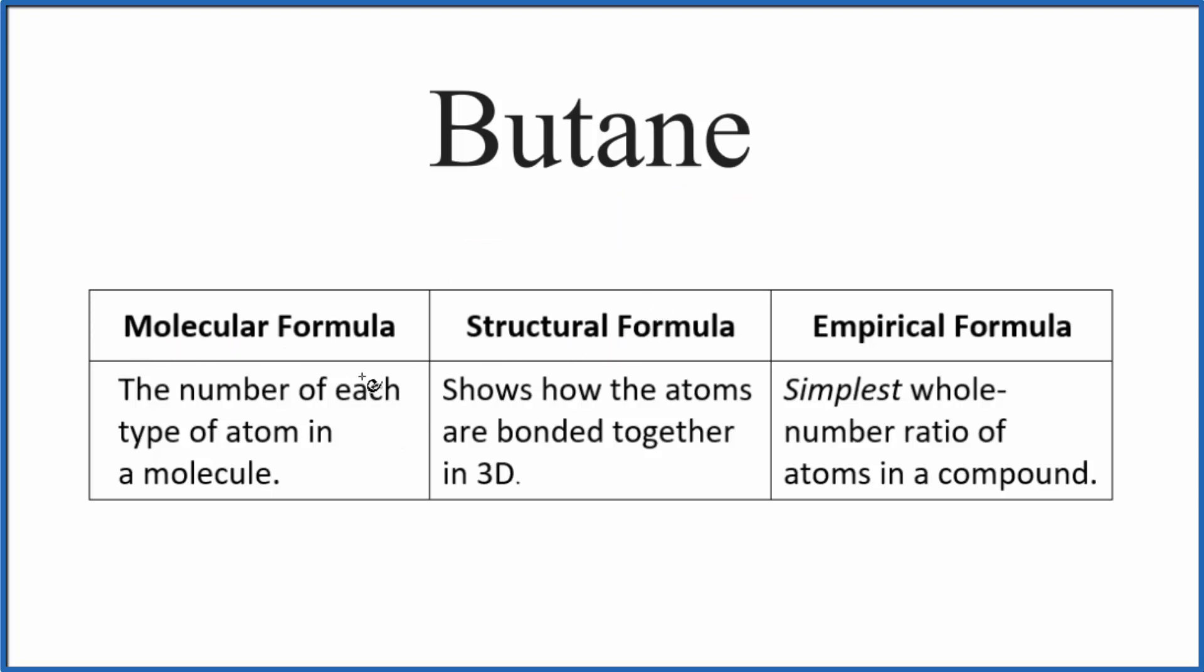Let's start with the molecular formula. This shows the number and type of each atom in the butane molecule. So the molecular formula for butane, that's C4H10, 4 carbon atoms, 10 hydrogen atoms.